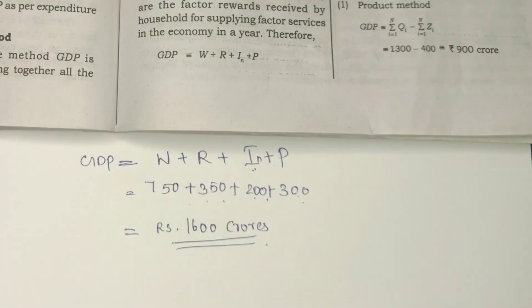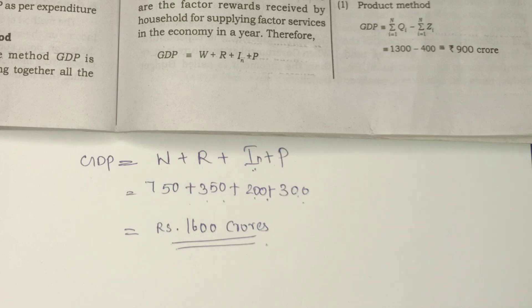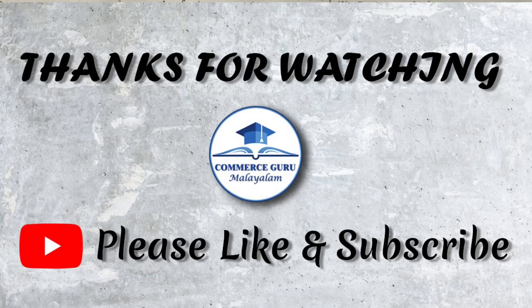So this is the income method. We need to add a simple formula and equations. If you have doubts, add them in the comment box. If you have 3 methods, we need to add a national income calculation — that would be GDP calculation and NDP calculation. In the third class, I will use 3 methods to calculate GDP and NDP. Thanks for watching.